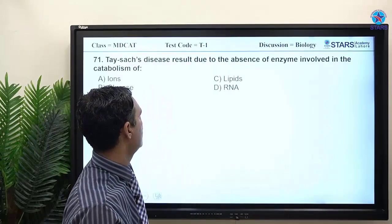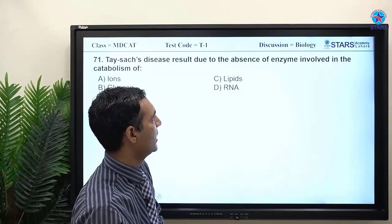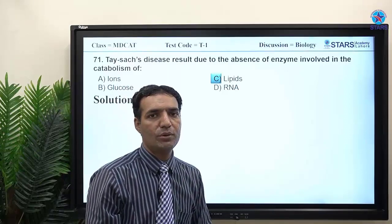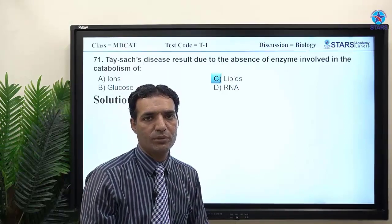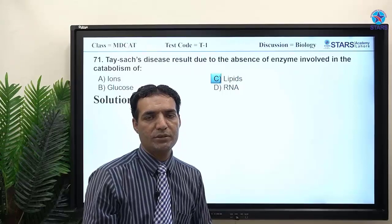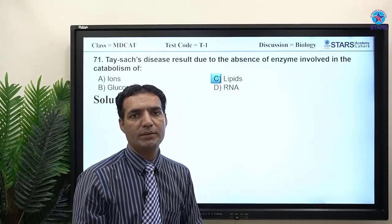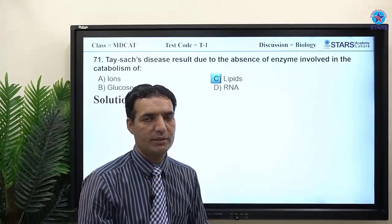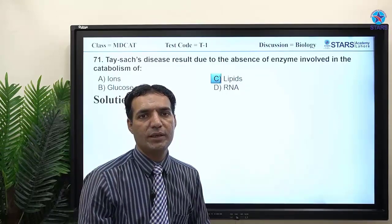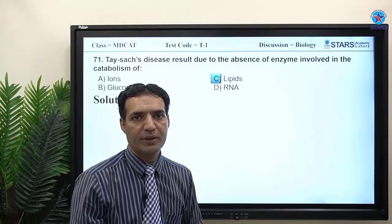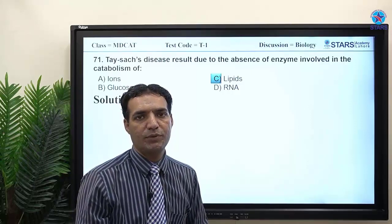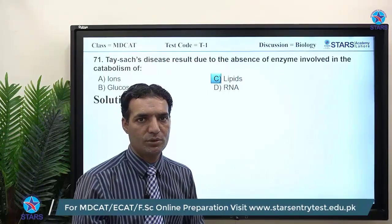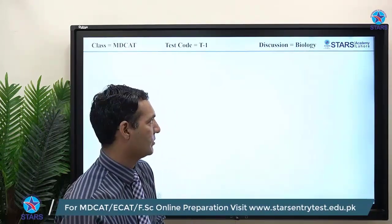Tay-Sachs disease results from absence of an enzyme involved in the catabolism of lipids — the lysosome lacks enzymes to digest lipids. The second lysosomal disease is glycogenosis type 2, where enzymes for breaking down carbohydrates are absent. Both diseases are due to lysosomal abnormalities — memorize these.